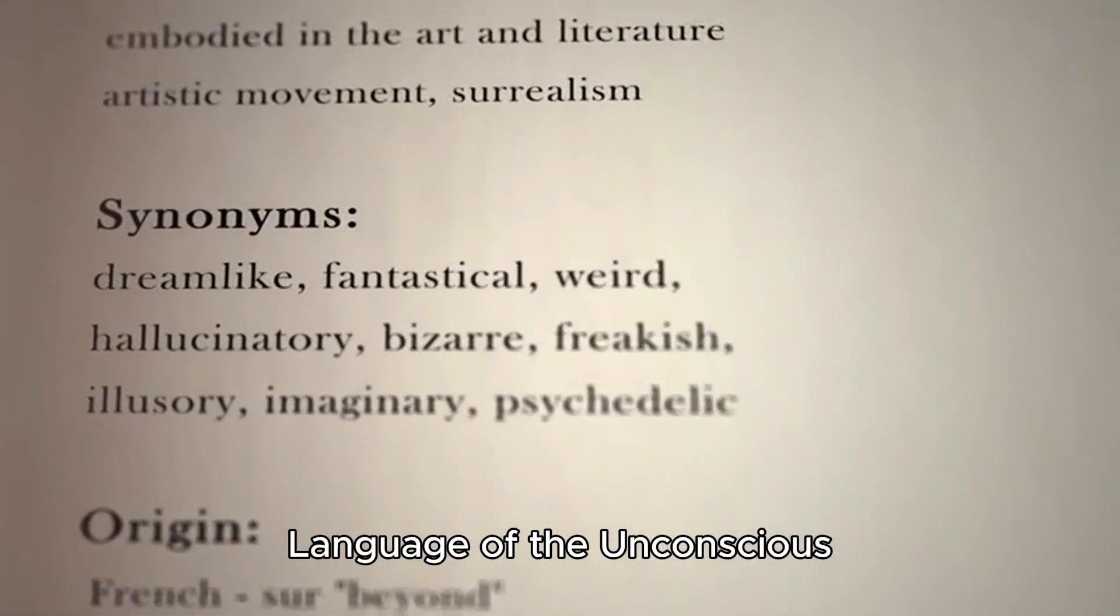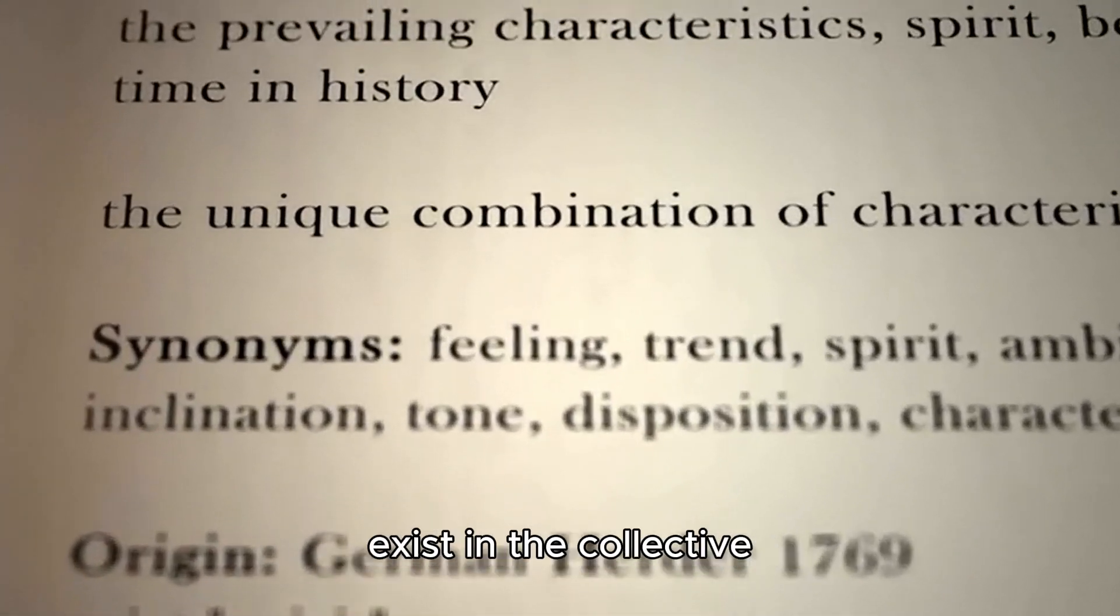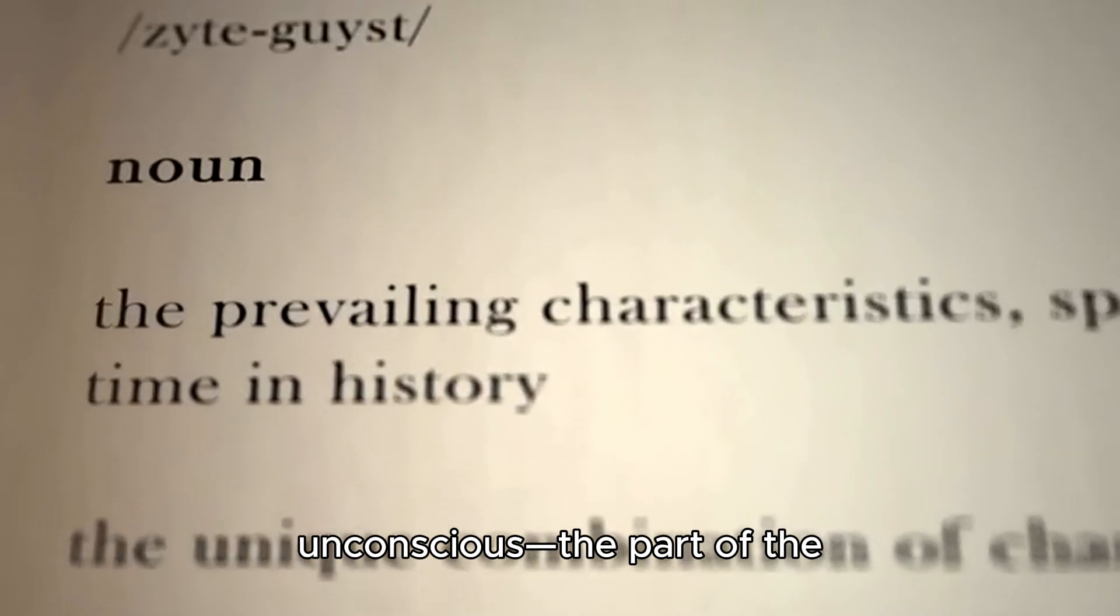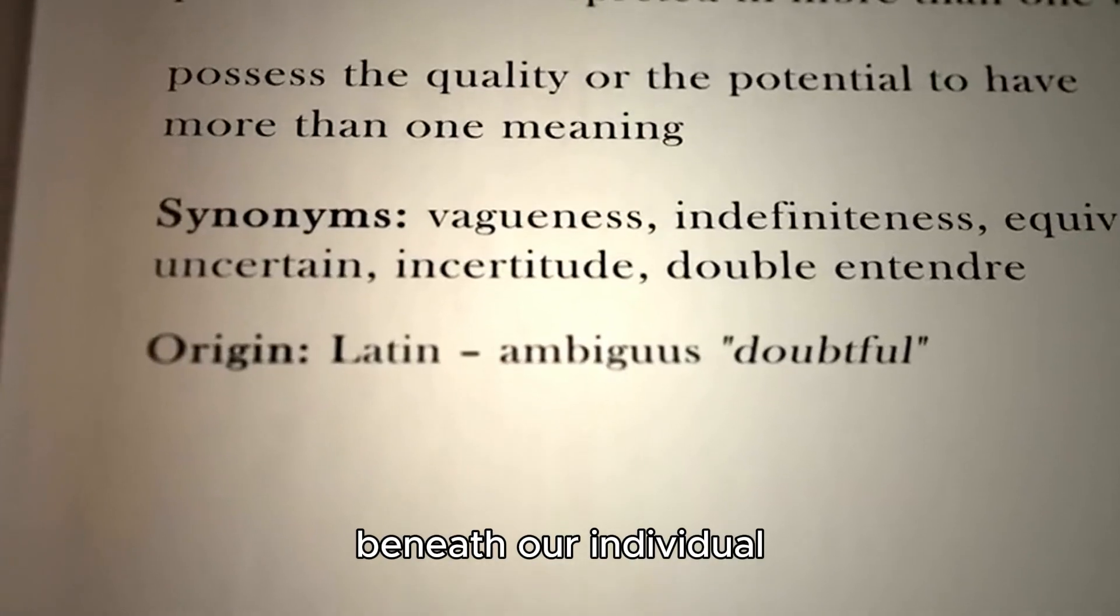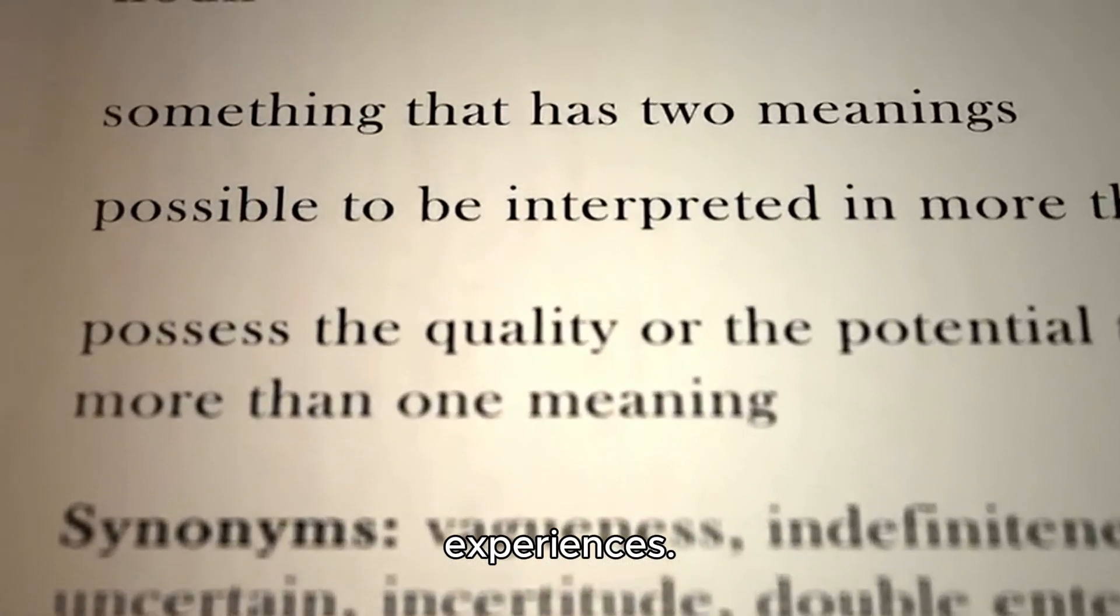Archetypes and numbers: the language of the unconscious. Jung introduced the idea of archetypes, universal symbols and patterns that exist in the collective unconscious, the part of the mind we all share, deep beneath our individual experiences.